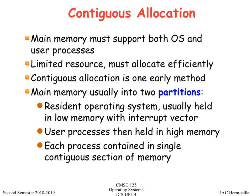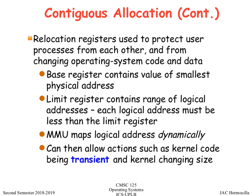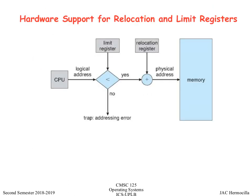Main memory has a part for the OS and a part for user processes. We don't want processes accessing memory used by other processes, so as a form of protection we have relocation registers — a base register and a limit register. In contiguous allocation, a logical address is compared to the limit register; if less than the limit, a relocation offset is added to get the physical memory address.